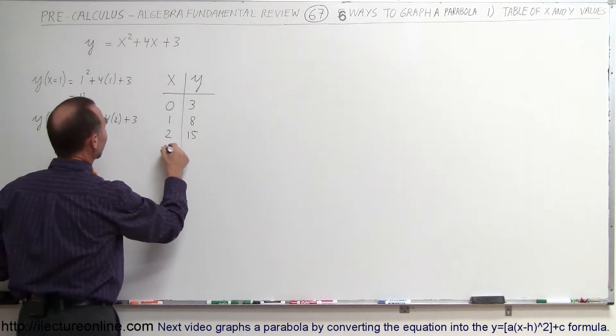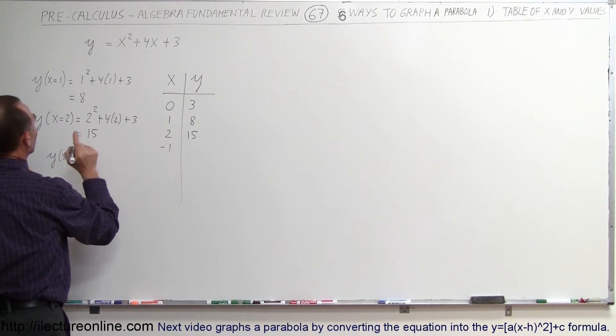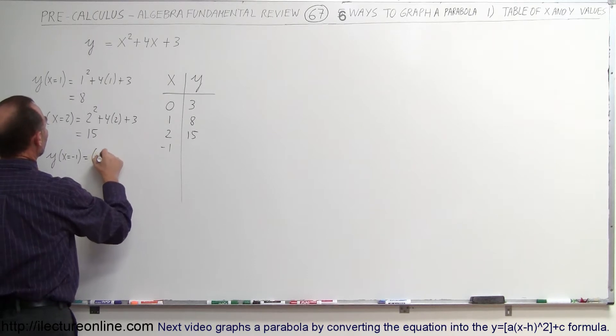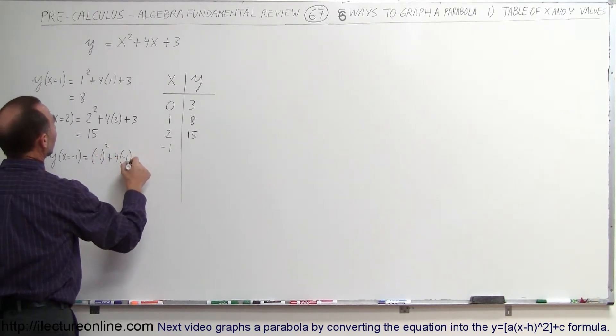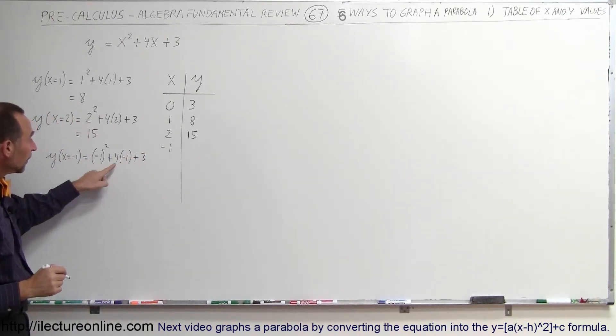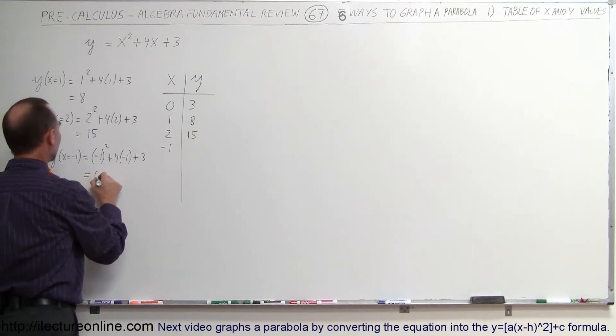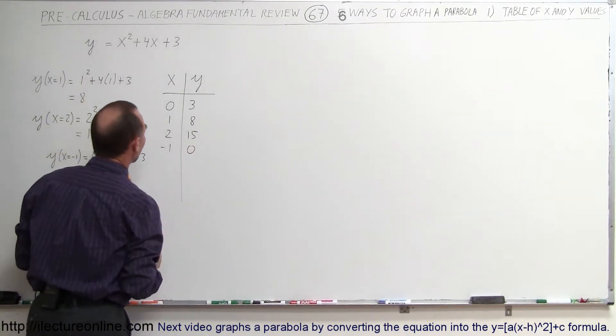What if x equals negative 1? All right, when x equals negative 1, we get y. When x equals negative 1, this is equal to, you may want to use parenthesis here, negative 1 squared plus 4 times negative 1 plus 3. Notice that negative 1 squared is still positive 1. 4 times negative 1 is negative 4. 1 minus 4 is minus 3 plus 3 is 0. So in this case, y is equal to 0.